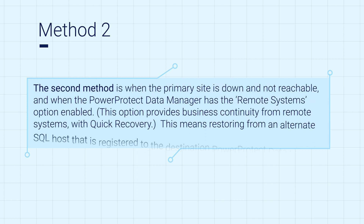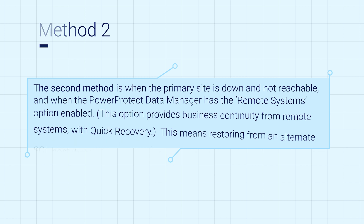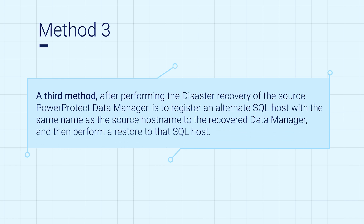The second method is when the primary site is down and not reachable, and when the PowerProtect Data Manager has the Remote Systems option enabled. This option provides business continuity from remote systems with quick recovery, meaning restoring from an alternate SQL host that is registered to the destination PowerProtect Data Manager. A third method, after performing the disaster recovery of the source PowerProtect Data Manager, is to register an alternate SQL host with the same name as the source host name to the recovered Data Manager and then perform a restore to that SQL host. We will discuss all three methods in detail in this video.